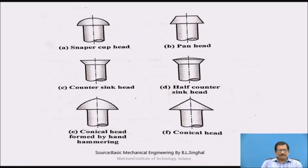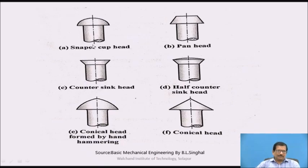The first one is snapper cup head. The head shape is not actual semi-circular but is a curved shape. This is the head, whereas the other part is called the tail or buck tail, which is hammered to hold the two work pieces or two plates together. The second one is pan head. If you observe this shape of the head, it is like a pan. This pan head is the head, whereas the tail will be hammered to hold the two work pieces.